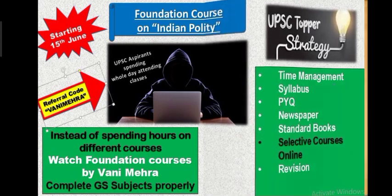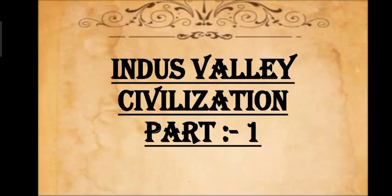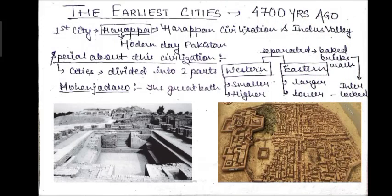Now let us start our course — Indus Valley Civilization Part 1. This topic is lengthy, which is why I have divided it into two parts. Before getting into the standard content, I would like to give some basic ideas via my handwritten notes. First, we will read about the earliest cities, which have been established about 4,700 years ago.